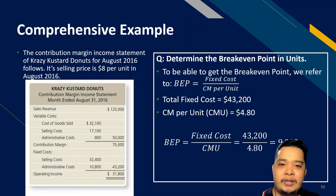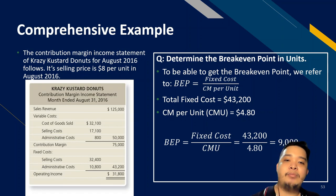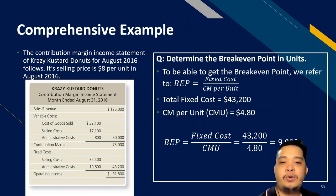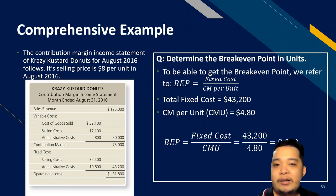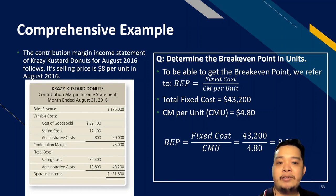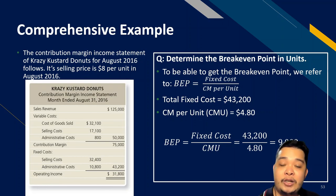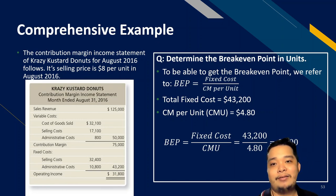The second question is: determine the break-even point in units using the CM per unit approach. Break-even units equals fixed cost divided by contribution margin per unit. Total fixed cost from the income statement is $43,200; contribution margin per unit is $4.80. So $43,200 divided by $4.80 gives 9,000 units as the break-even volume.